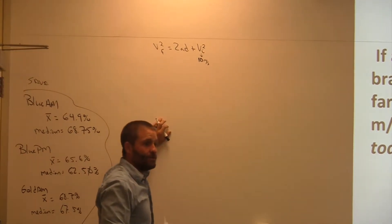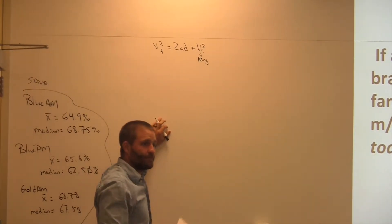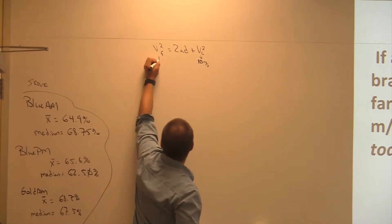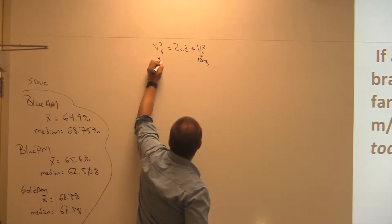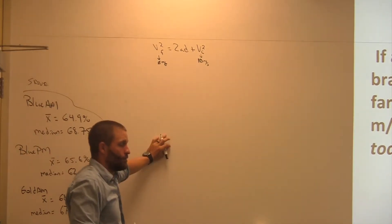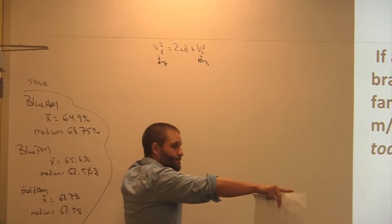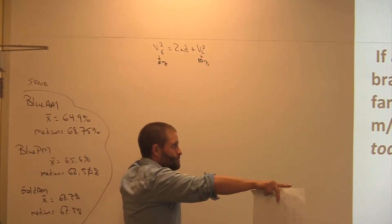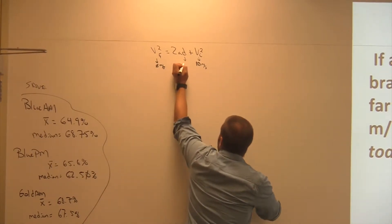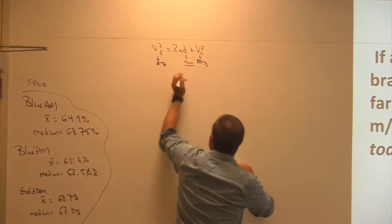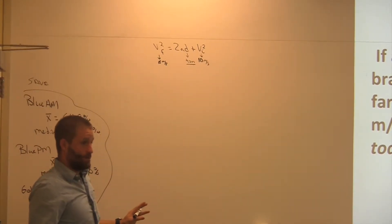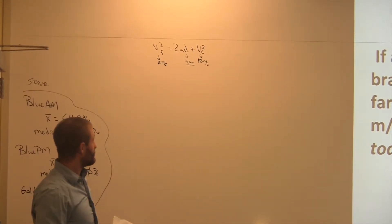What's my final velocity, Dylan? What do you think? Yes, very good. Zero. What's my distance? Perfect, yeah. What's the only thing we don't know in this equation? A. Acceleration, right? I'm going to solve for that now.